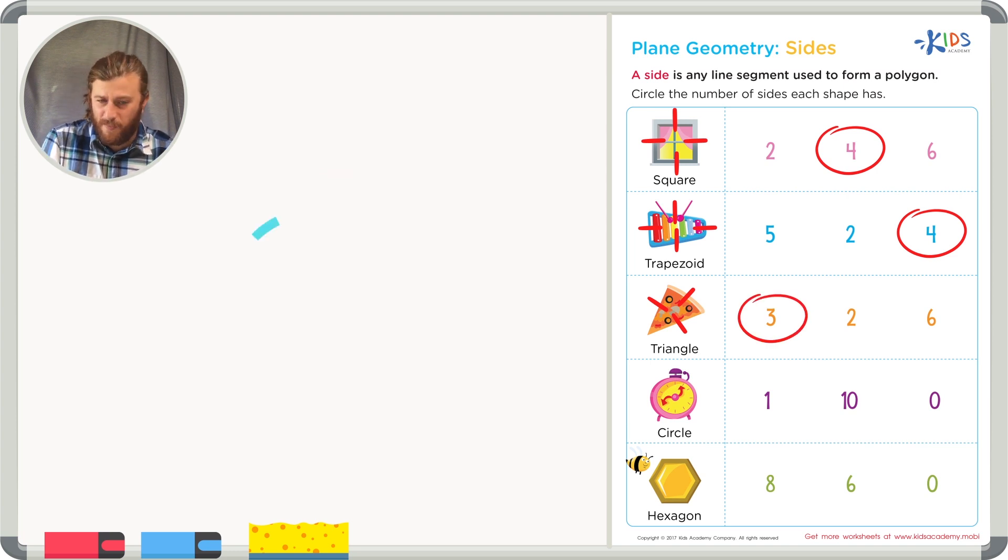Our next shape is a circle. Let's draw a circle. How many sides do you see on this circle? None! There are no sides in a circle. Therefore, we'll circle the number zero, because there are no line segments that make up this shape.